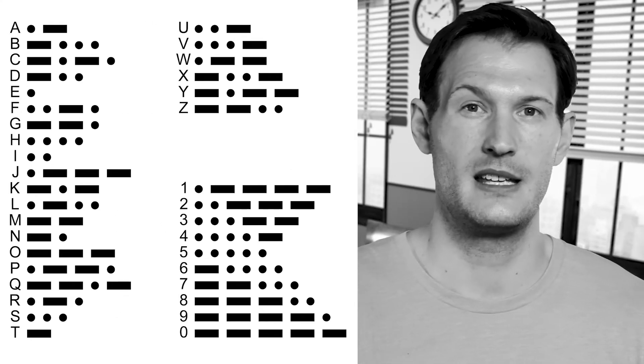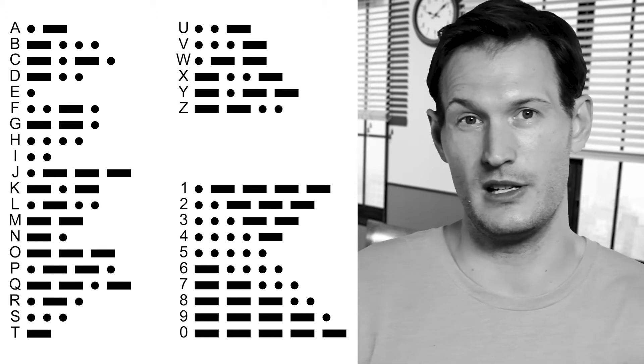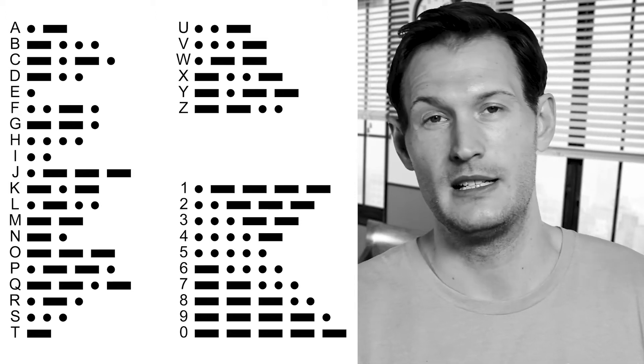Morse Code was originally invented in 1844 by Samuel Morse. He sent the first telegraph message from Washington, D.C. to Baltimore, Maryland. And the messages are basically a set of dots and dashes. A dot is a short click and a dash is a long click.